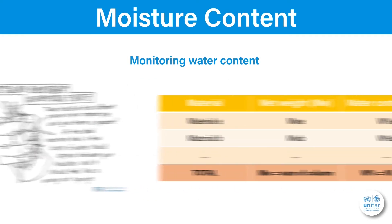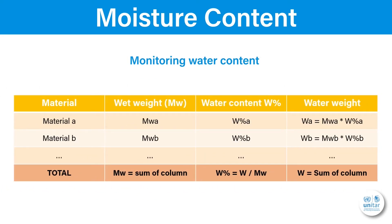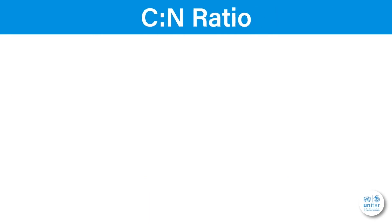Now, what if you have different masses of materials with different water contents? How much final water content can you expect? This can be known by first calculating the water weight in each material, then summing this up and dividing it by the total wet weight of all materials.